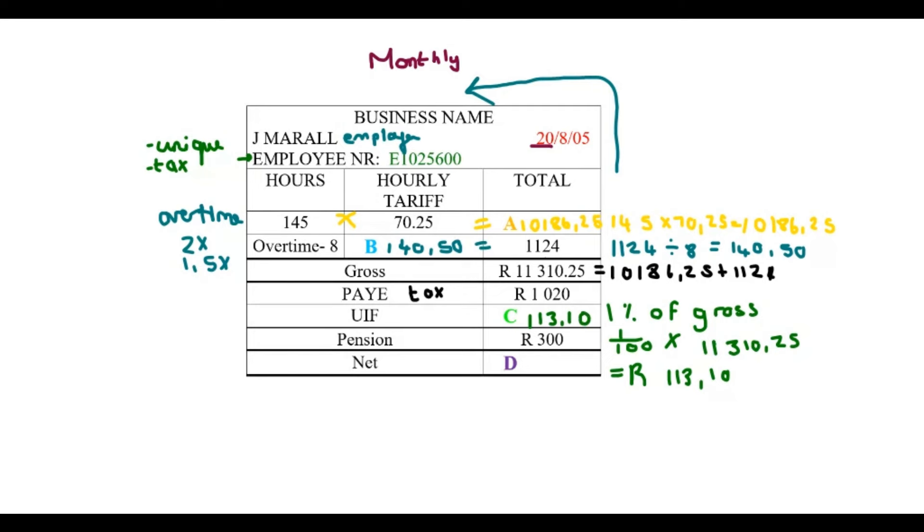And finally, my net or take-home pay, D. I need to calculate that. Now remember, we said the net pay is basically your gross minus all the deductions. Deductions, in this case, is the payee, the UIF, and the pension.